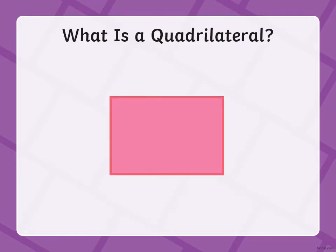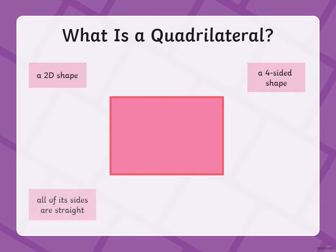Okay, so what is a quadrilateral? It's a 2D shape. It has four sides. All of its sides are straight, and we also know that it has 1, 2, 3, 4 — what do we call those again? That's right, four vertices.